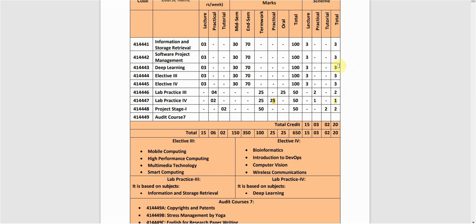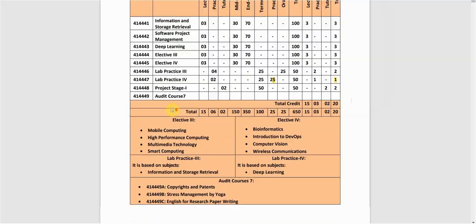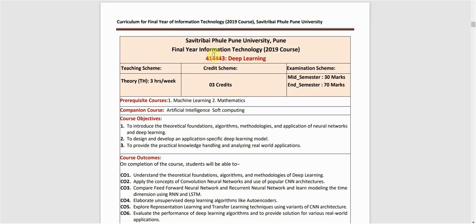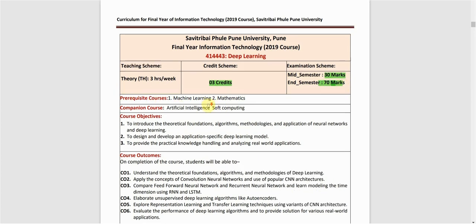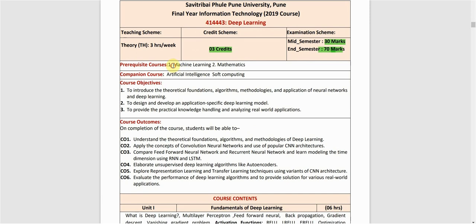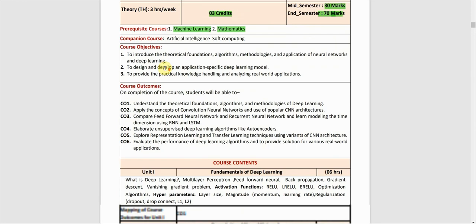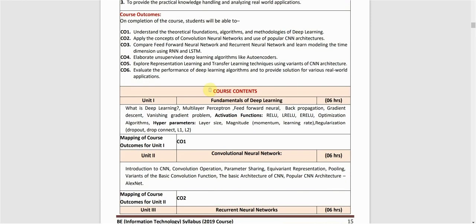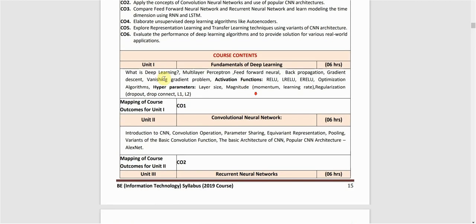Total credits for this subject, including theory and lab practice, is four. The theory has three credits with a mid-semester of 30 marks and end-semester of 70 marks. Prerequisites for this subject are machine learning and mathematics, specifically discrete mathematics. You can also review the course objectives and course outcomes before jumping to the course contents.